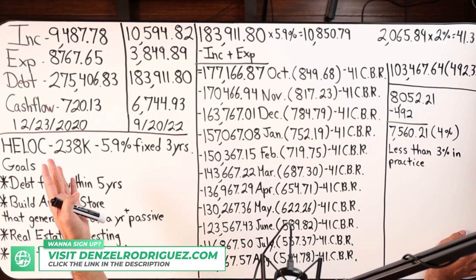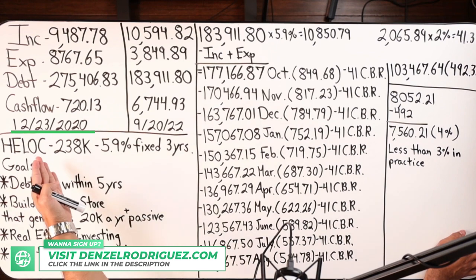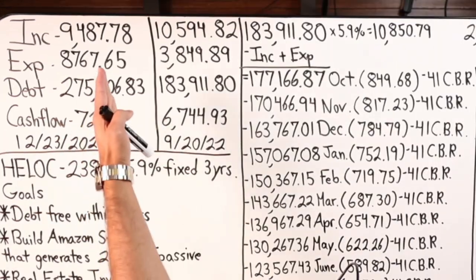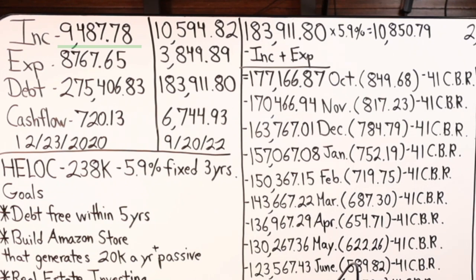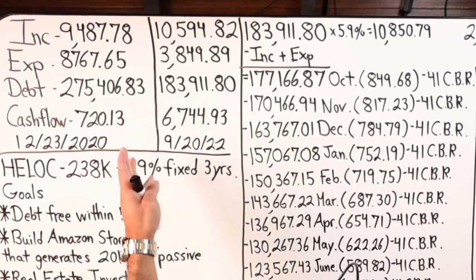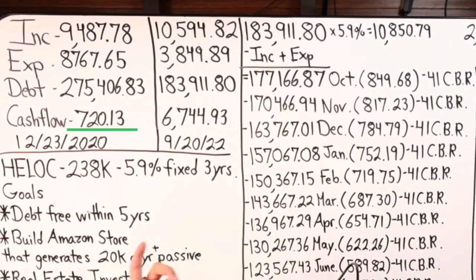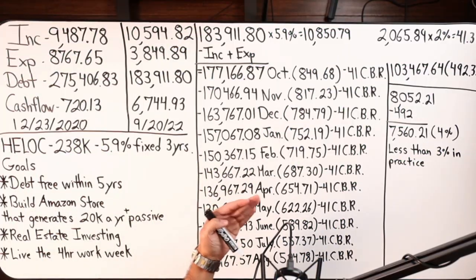Of a client that started working with me back in December of 2020. Here were their four major numbers then: making $9,487.78 a month, expenses were high at $8,767.65, total debt a little over $275k, and their cash flow starting out was $720.